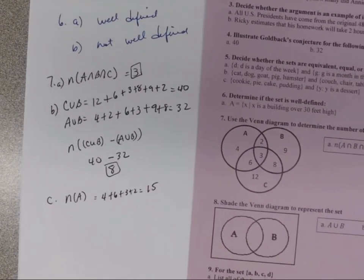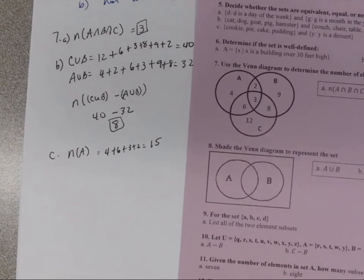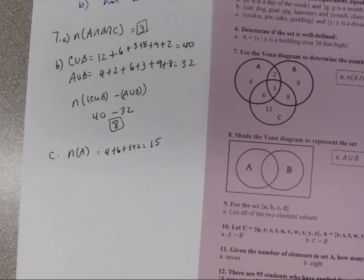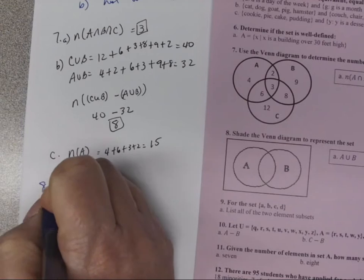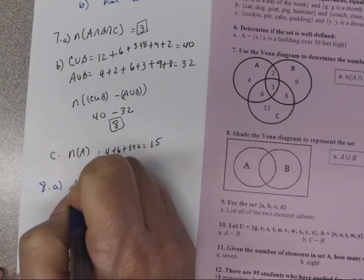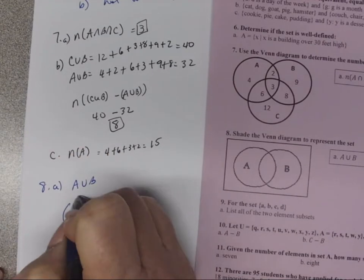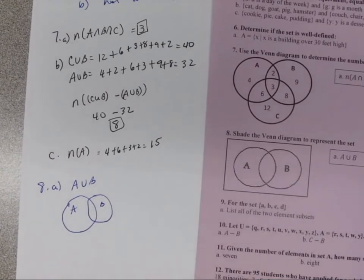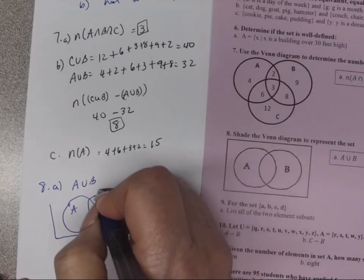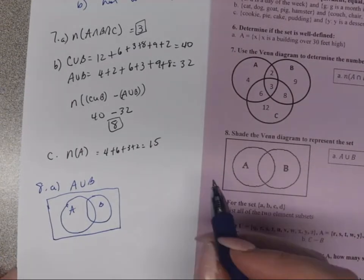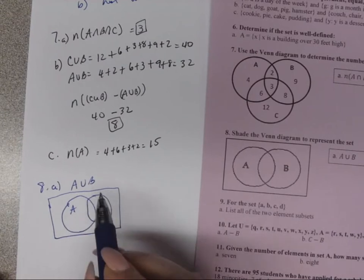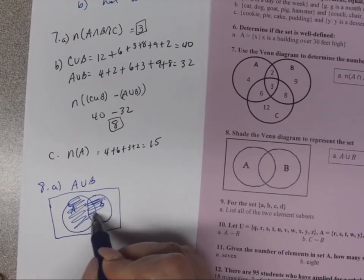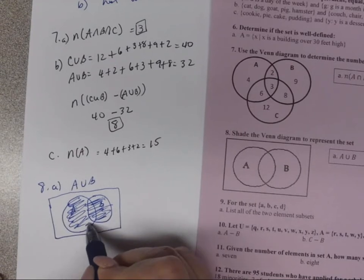Question 8 asks us to shade the Venn diagram to represent the given set. For Part A, A union B: we shade all of set A and all of set B — everything inside both circles. That's what A union B looks like.